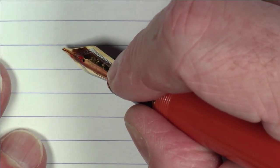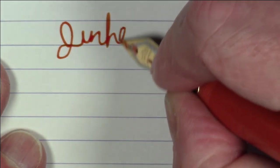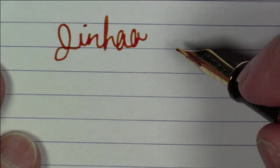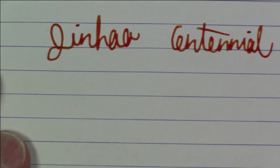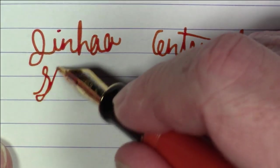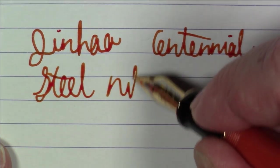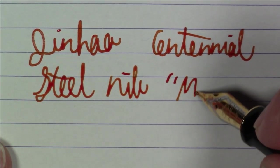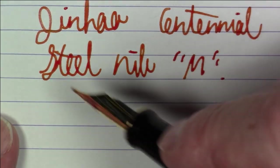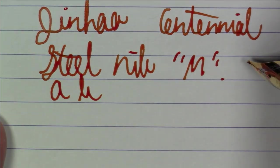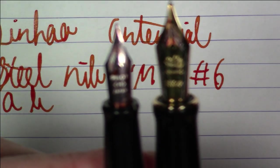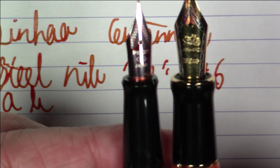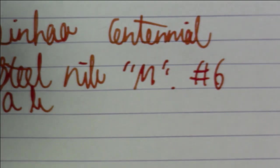Okay, folks, what we're writing with here is a Jinhao Centennial. And this pen has a steel nib in medium. And, you know, like I said, this Jinhao number six nib, oh yeah, it is a number six nib. So, just to give you an idea of the size of this nib, here it is, let's compare it with a Pilot Metropolitan nib. As you can see, it's a pretty beefy, nice-sized nib.